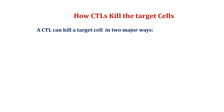As we know, CTL — that is the cytotoxic T lymphocyte — is also known as the killer T cell. CTL can kill target cells. Target cells means macrophages or antigen-presenting cells. CTL kills target cells in two major ways.